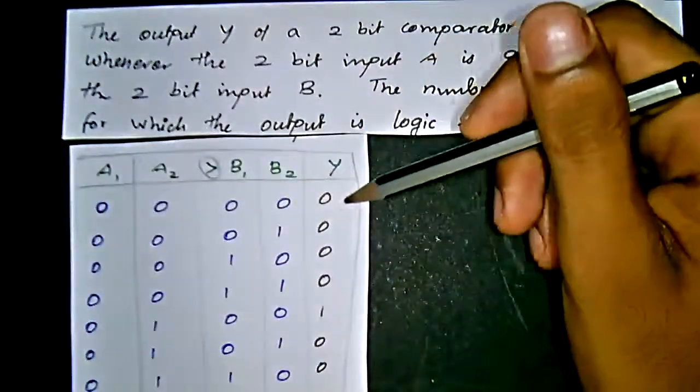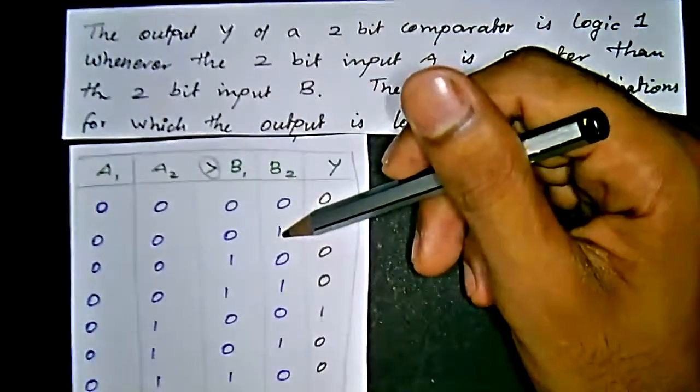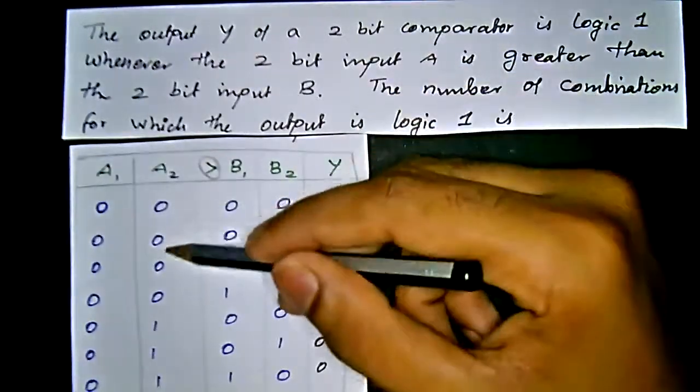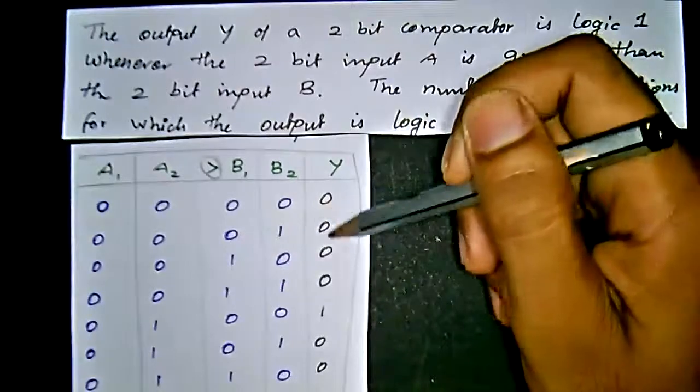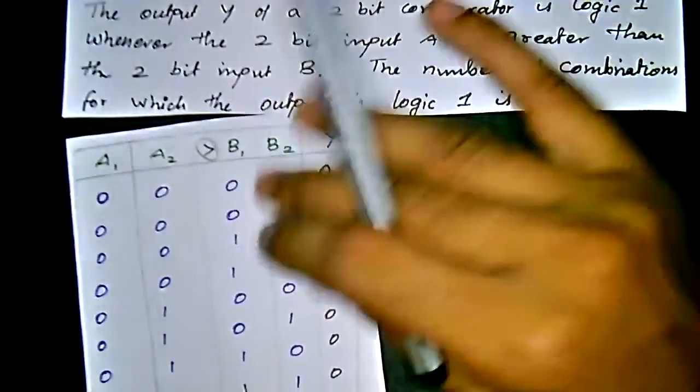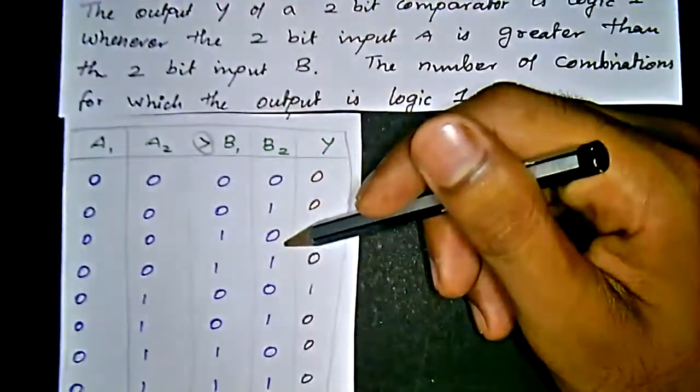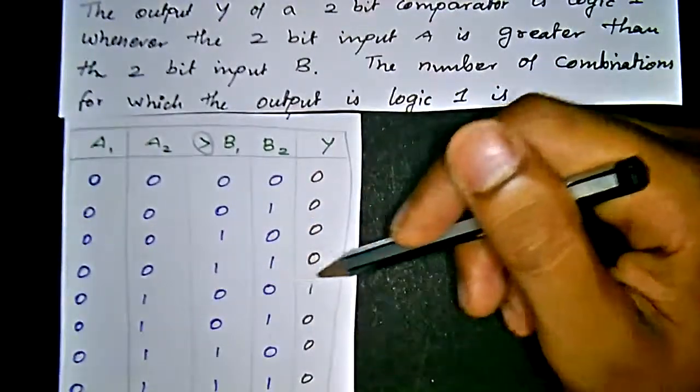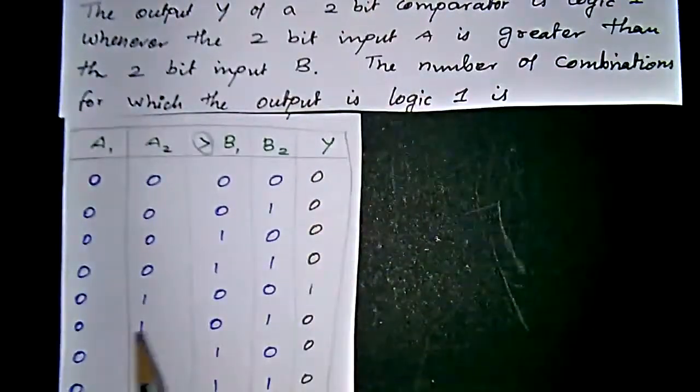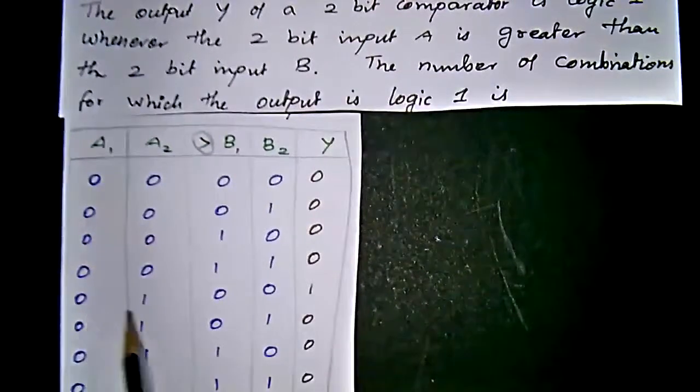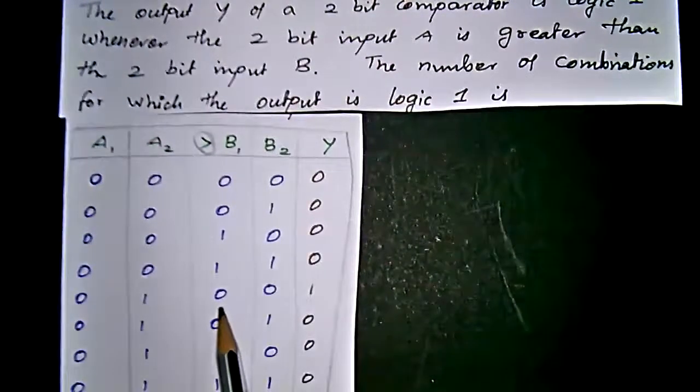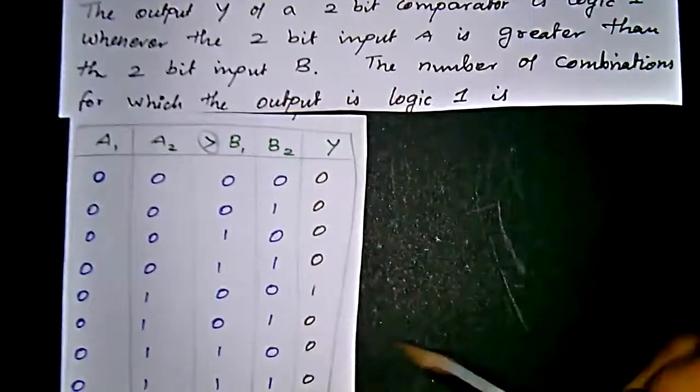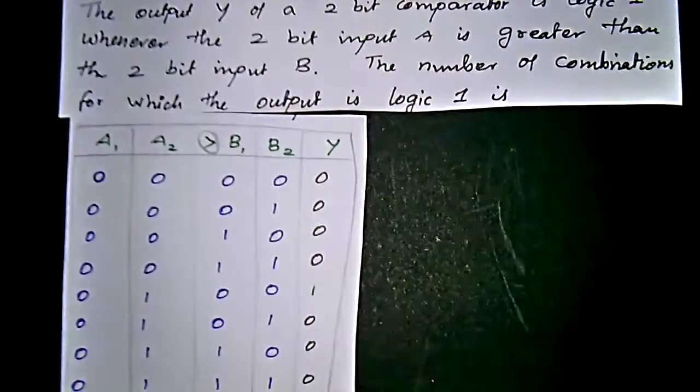So we have 0, 0, 0, 0 which gives output 0. Then 0, 0, 0, 1 gives 0. And 0, 0, 1, 0 gives 0. And 0, 0, 1, 1 gives 0. When we have 0, 1 for A and 0, 0 for B, we get output 1. This is the first term, so we count it as 1.